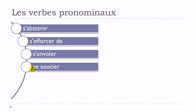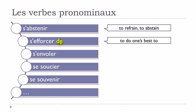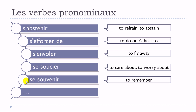More examples in this same category: s'abstenir, s'efforcer de, s'envoler, se soucier, se souvenir. It's exactly the same situation — these verbs only exist as verbes pronominaux, used with se before them, and they don't exist without it.